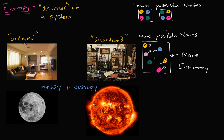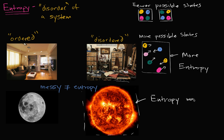Using that same reasoning, let's go back to the moon and the sun. The sun is larger, it has way, way more molecules, and those molecules are moving around way faster — they're hotter and moving past each other. The moon is small, cold, has fewer molecules, and for the most part it's rigid with a very low temperature, so things aren't moving around much. It has way fewer states and configurations than the sun. So the entropy of the sun, viewed as a system, is much larger than the entropy of the moon.